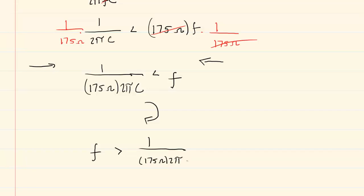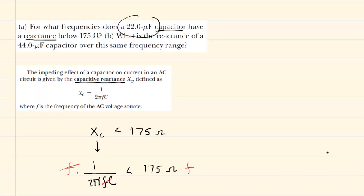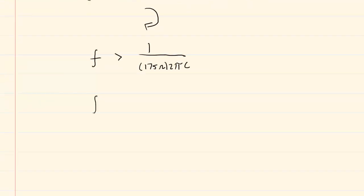And then at this point, we can simply plug in the known value of the capacitance. That, again, was given as 22 microfarads. Now, when we plug this in, we're going to make sure that we convert the microfarads to the standard unit of farads. So it was 22 microfarads, so that means it's 22 times 10 to the negative 6 farads. That's the way to convert microfarads into farads.